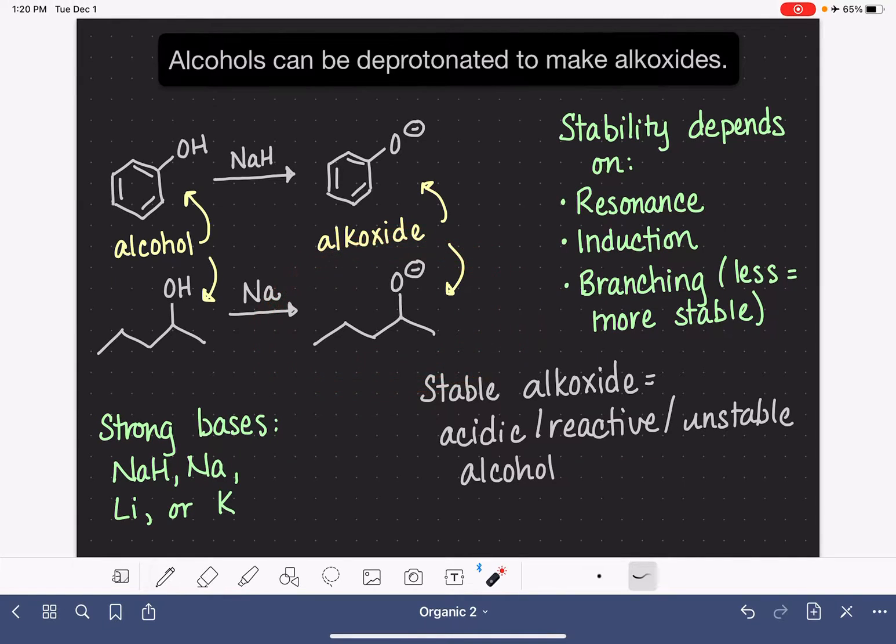Whereas if we have an alkoxide that is not very stable, that means that this reaction is very sluggish. It doesn't want to move forward. That would mean that this particular alcohol is not very reactive because it doesn't have a lot of motivation to make this alkoxide.